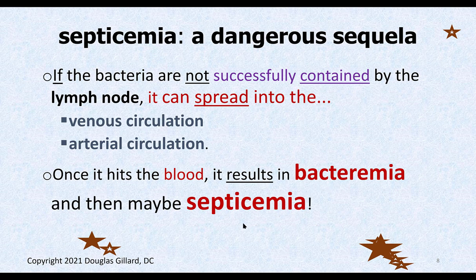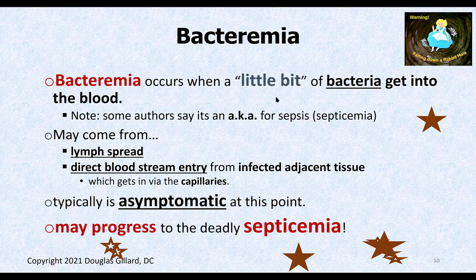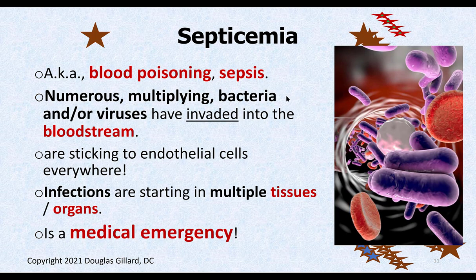Some call it bacteremia when it first gets in. Bacteremia occurs when a little bit of bacteria enter the blood but not enough to cause fever or symptoms — your immune system may take care of it and you never even know. But if the bacteria keep multiplying while in the bloodstream you start getting sick, and then you have septicemia — also called blood poisoning or sepsis. Here's a cartoon showing bacteria mixed with flowing red blood cells.